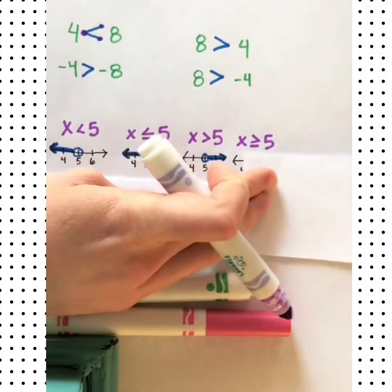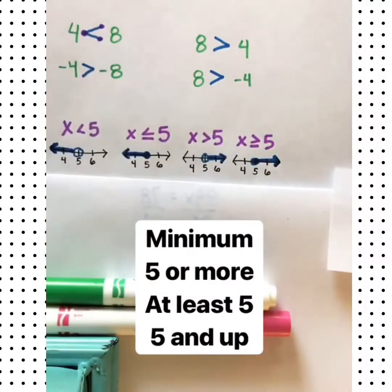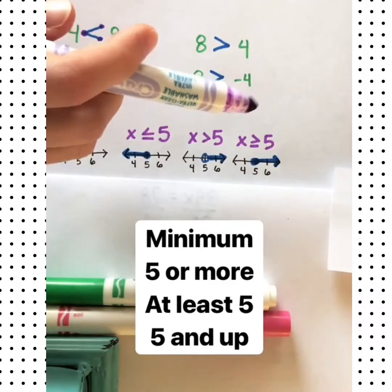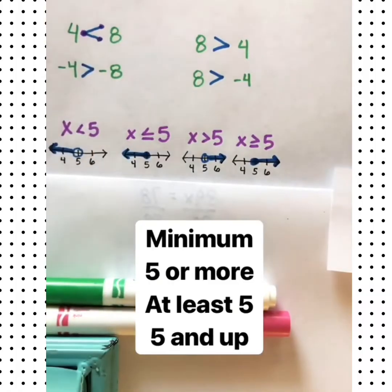And then we have x is greater than or equal to 5. We'll do a closed dot to let everyone know 5 is included in the solutions and we'll shade to the right. In a word problem, you might see words like a minimum of 5, 5 or more, at least 5 or 5 and up.